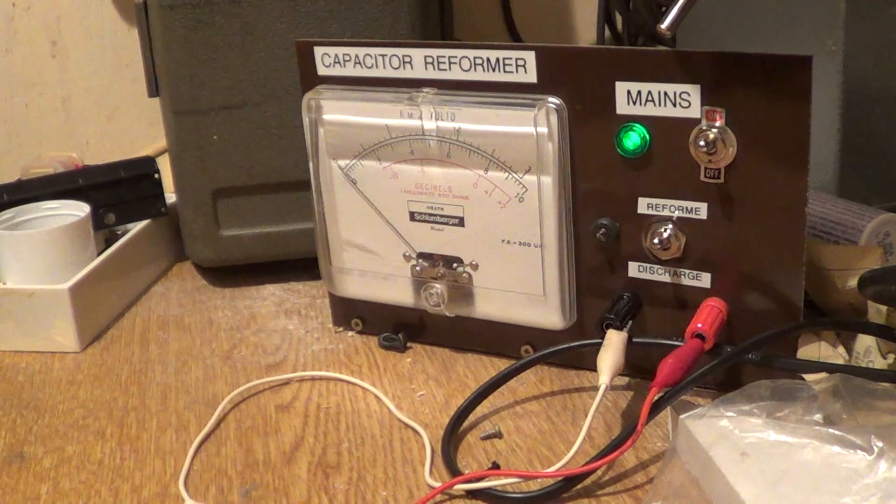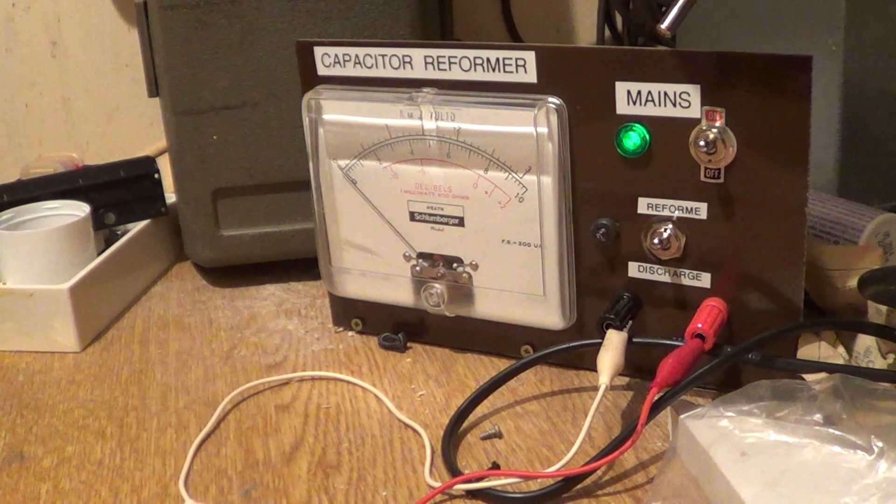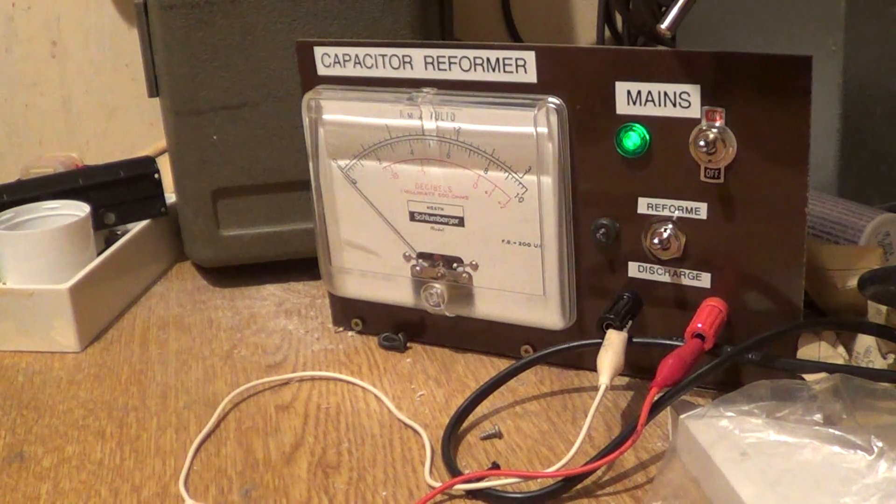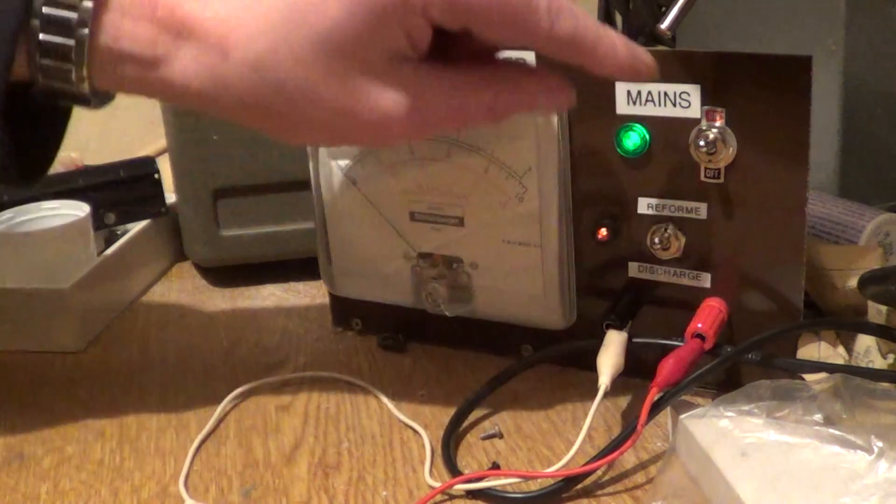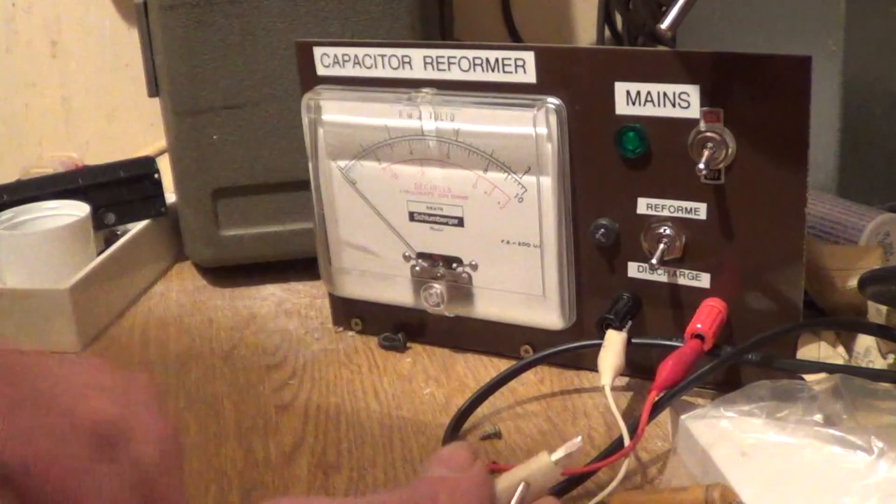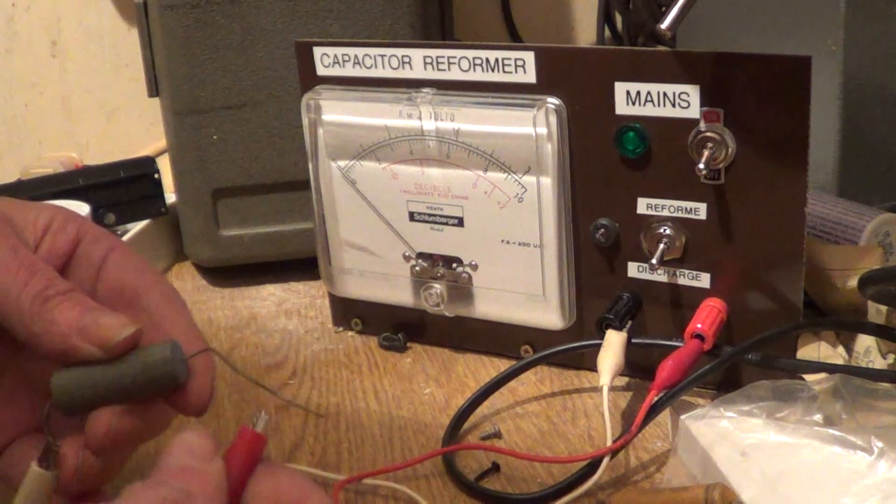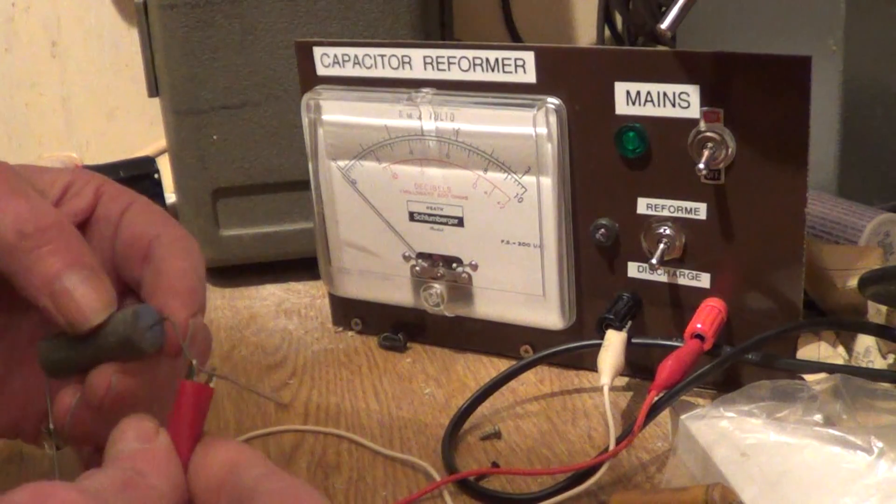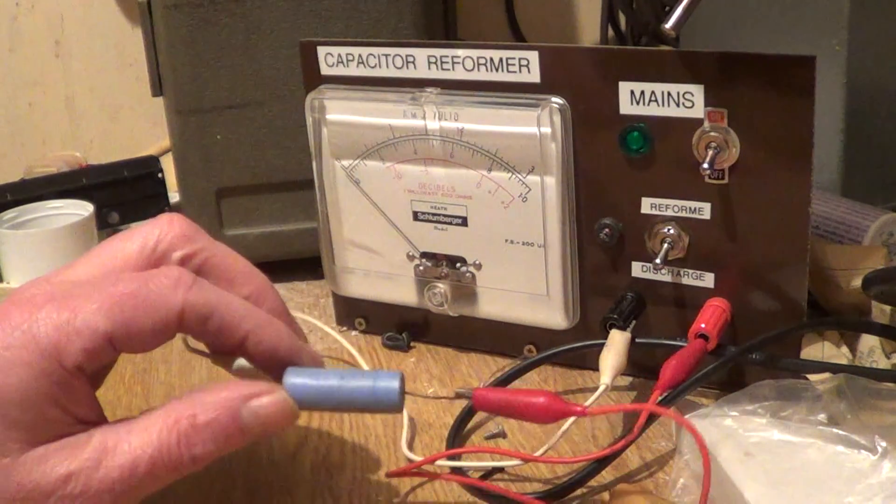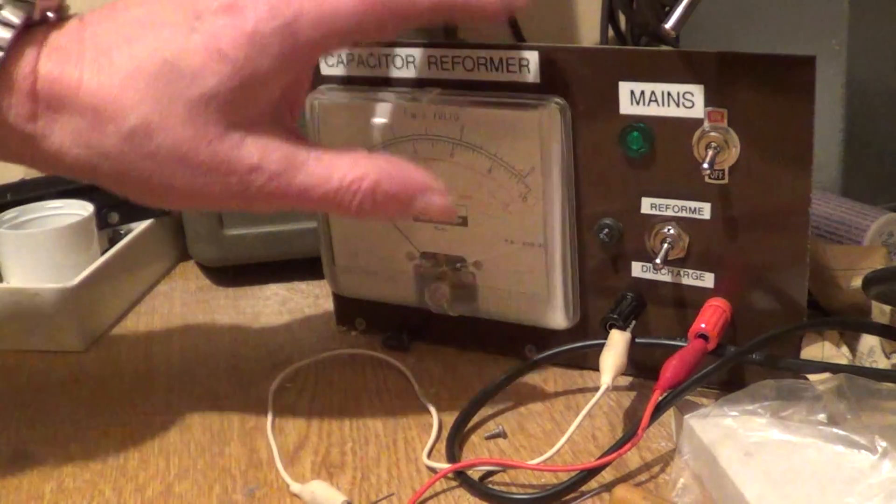In fact though, if I get a 0.1 microfarad well-known good capacitor, we'll see the difference. Again the leads can go any way round. This is the common or garden Radio Spares type used in the late 60s, 70s.